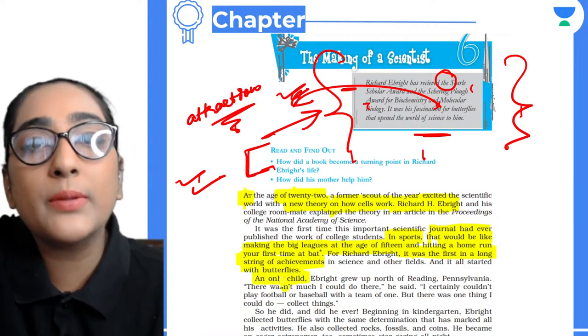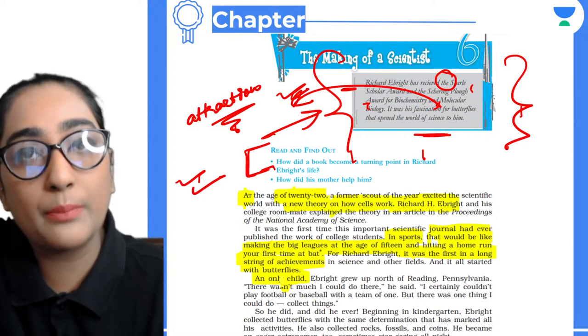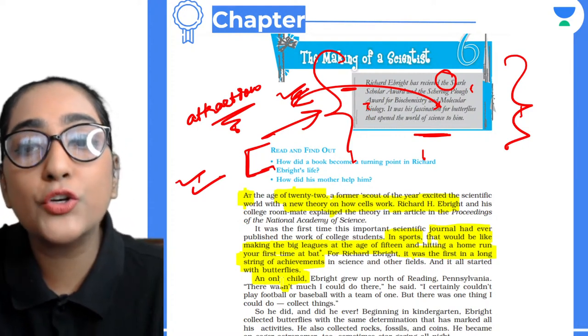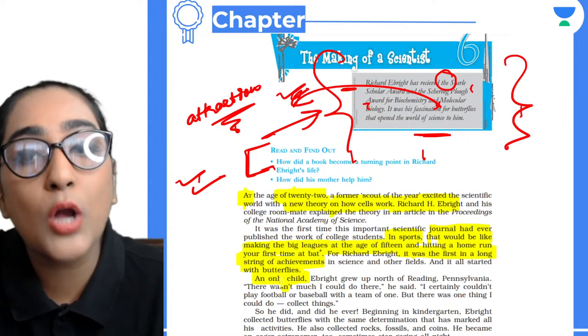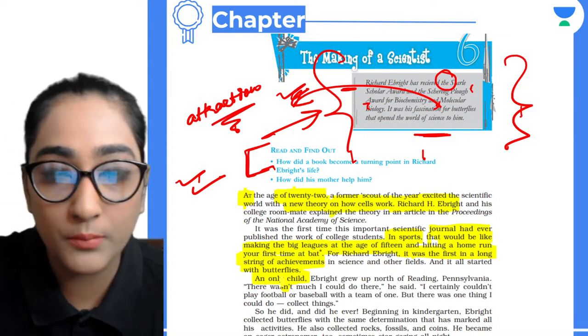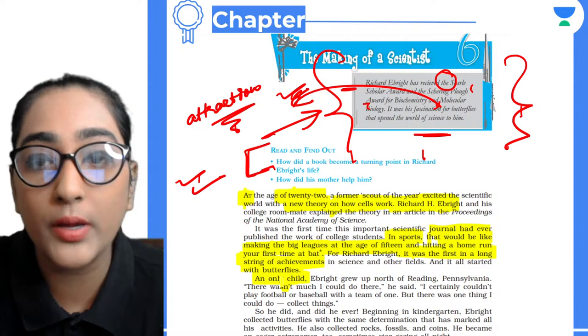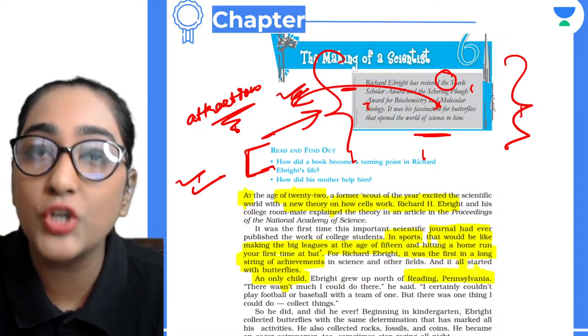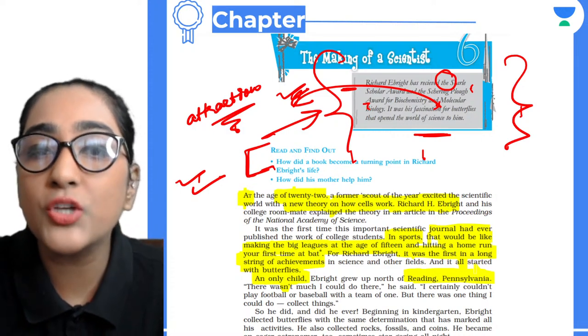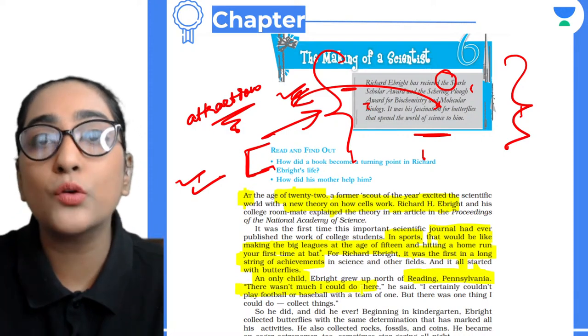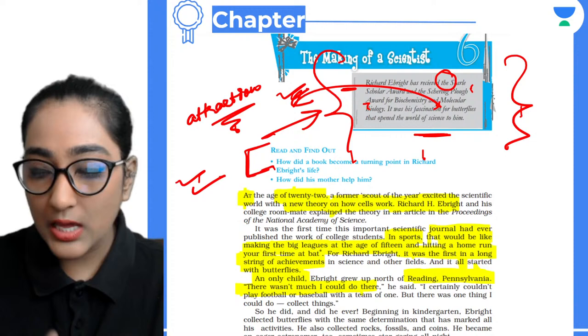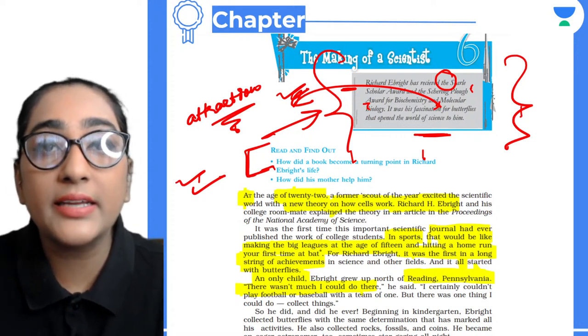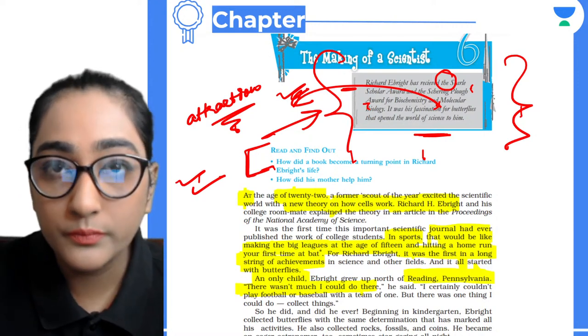An only child - this means Richard Ebright was the only child of his parents. Ebright grew up north of Reading, Pennsylvania. There wasn't much I could do there, he says. I certainly couldn't play football or baseball with a team of one.